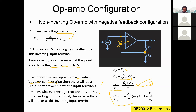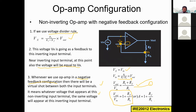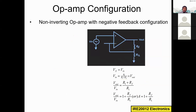So the gain formula for this non-inverting op-amp configuration is: A = 1 + Rf/R1. Remember, for the inverting op-amp configuration the formula was A = −Rf/R1. For the non-inverting configuration, where the input is applied to the non-inverting terminal with negative feedback, the gain is A = 1 + Rf/R1. This is the gain formula we have derived for the non-inverting operational amplifier.